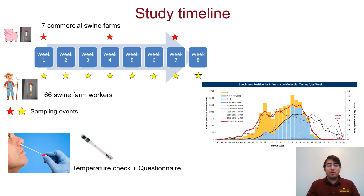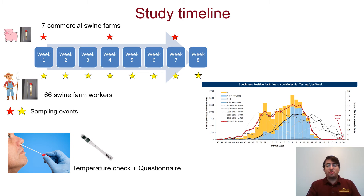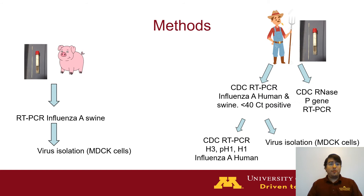Here on the lower right, we have a graphic of the CDC influenza monitoring program. Depending on when we observed a rise of influenza cases in a specific region, we would then start our study to increase our chances of detecting influenza positives in the humans.